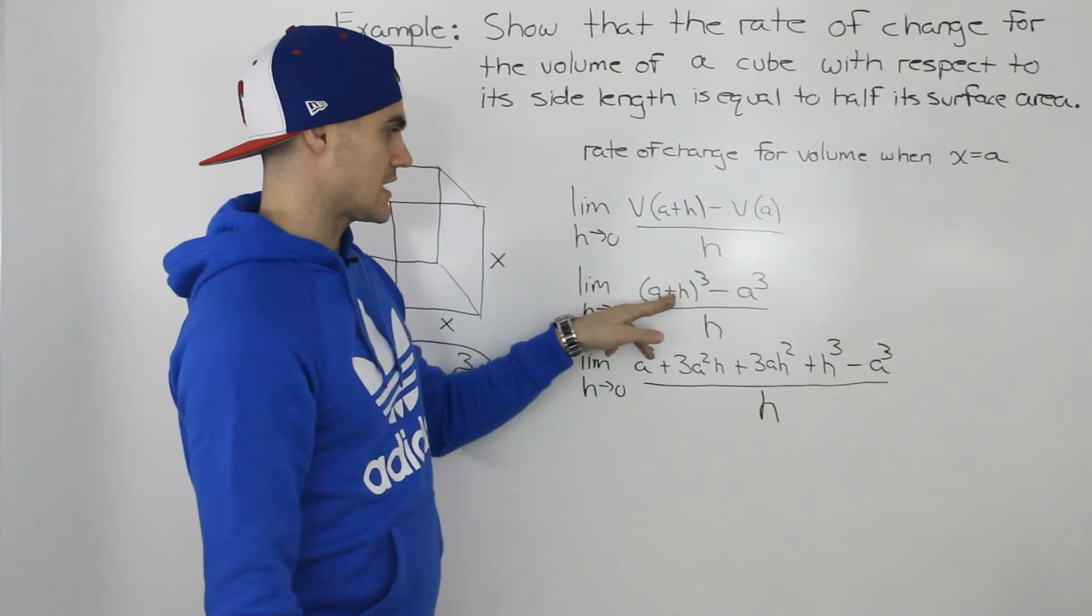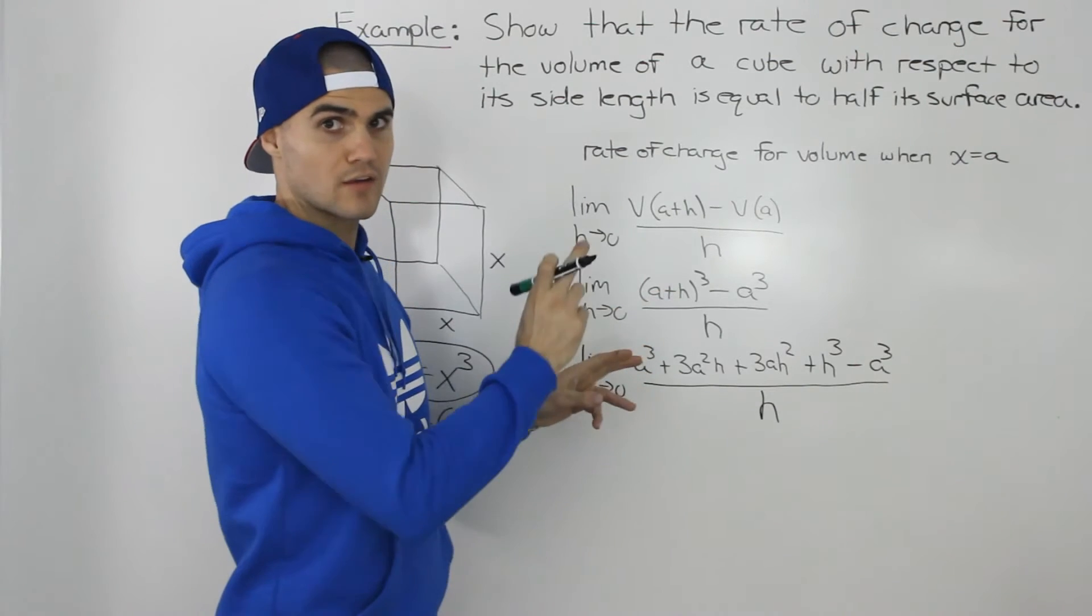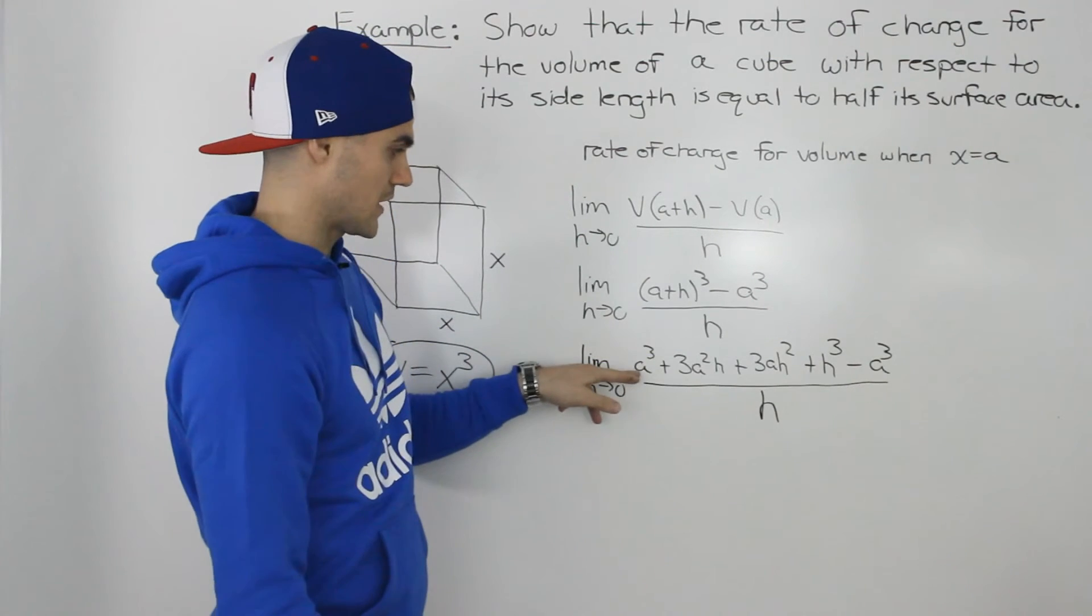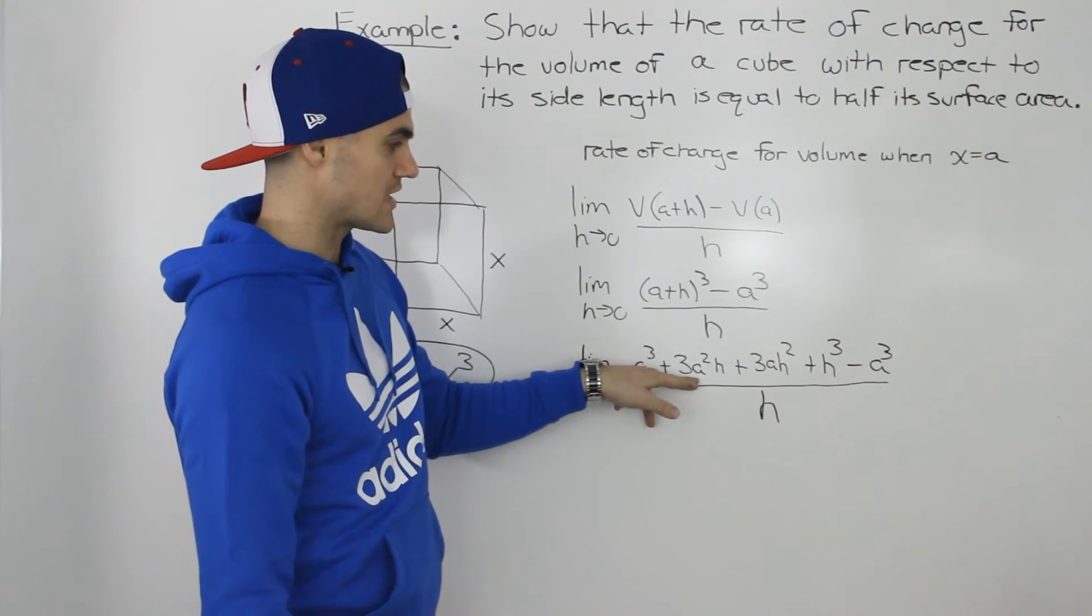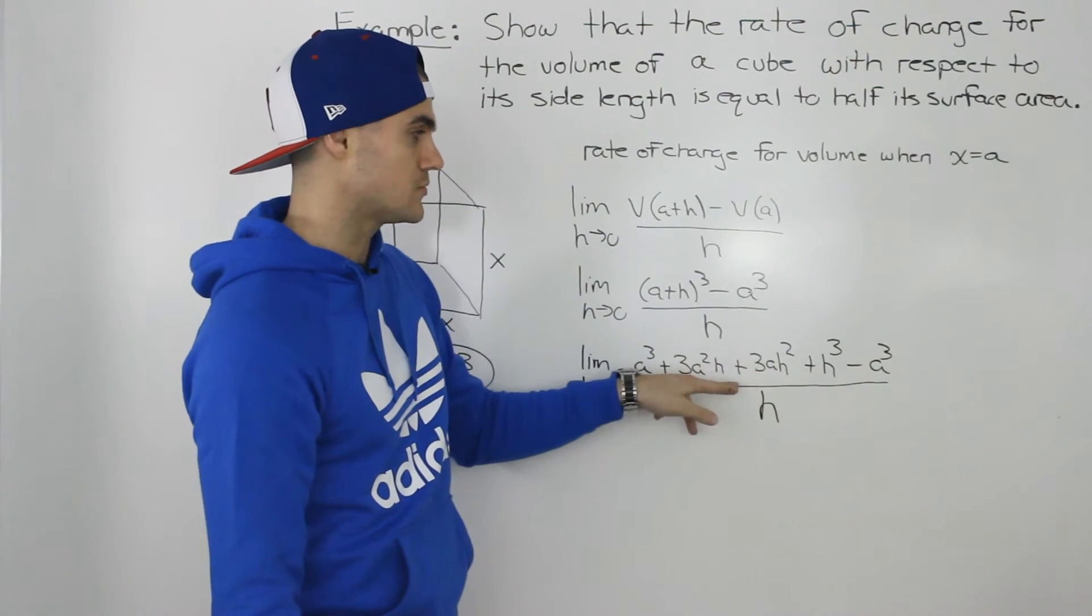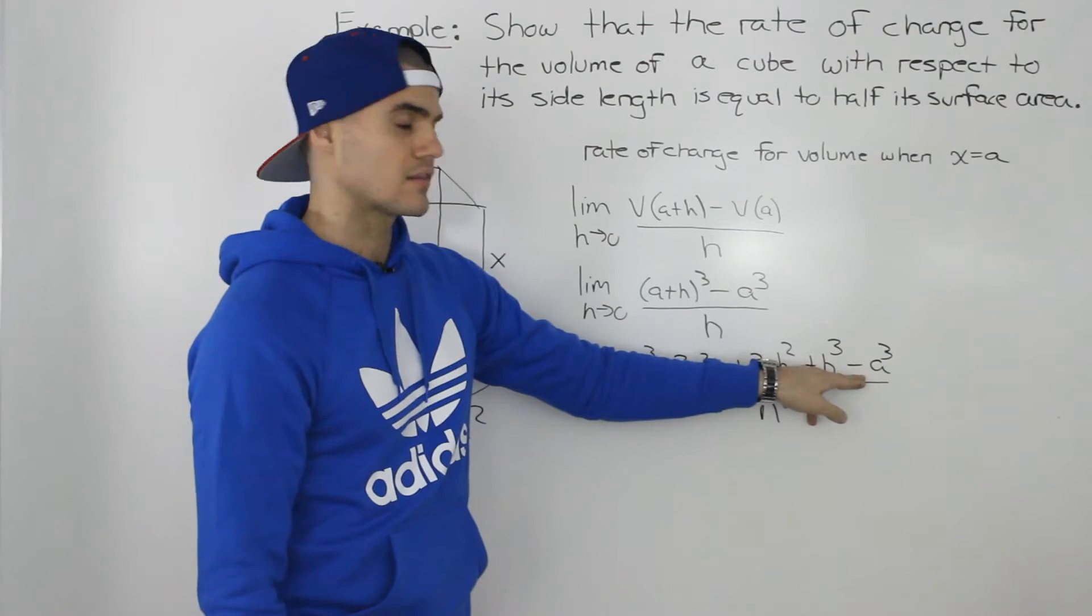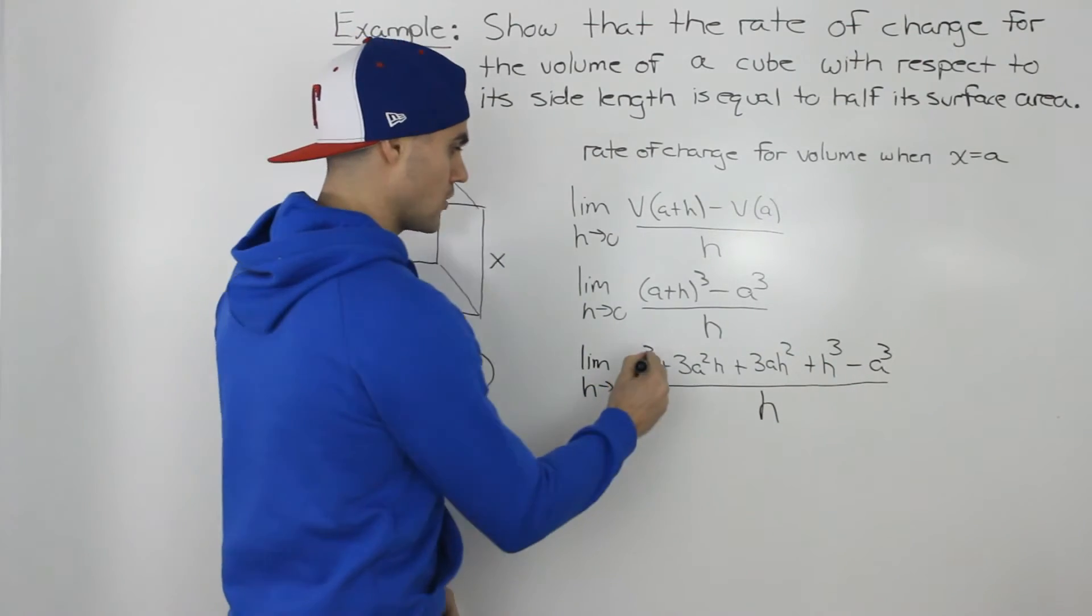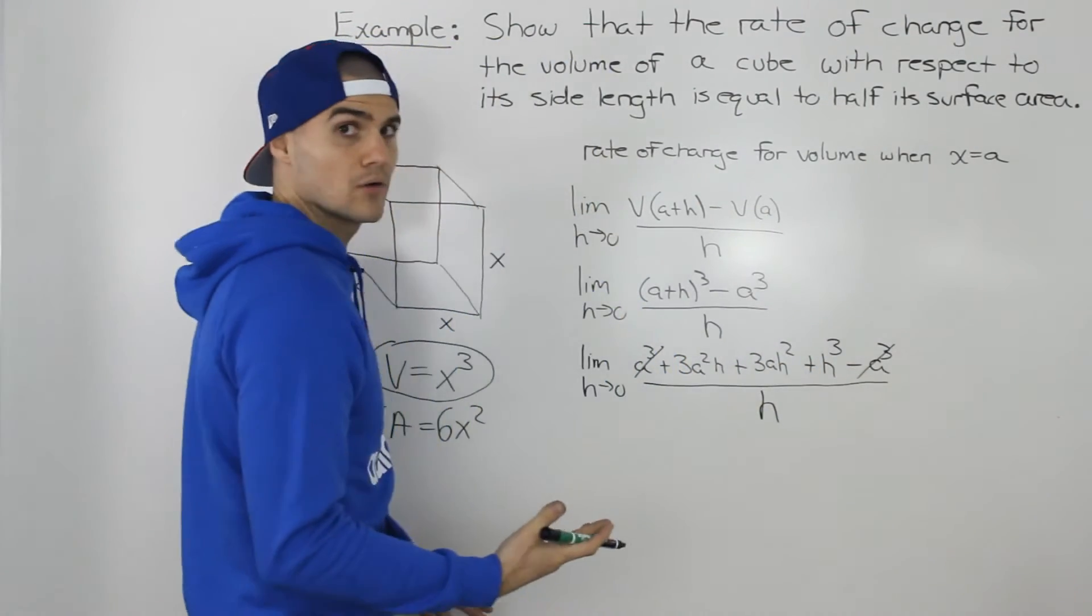So then when we take this (a + h) cubed and foil it out three times we would end up with a cubed plus 3a squared h plus 3ah squared plus h cubed, and then we're still subtracting that a cubed there. And then notice how these a cubes cancel out.